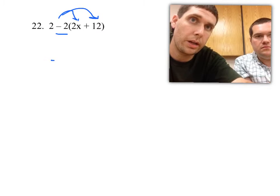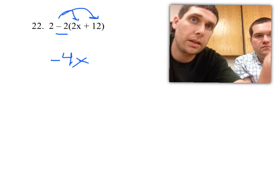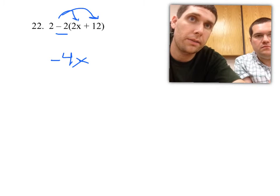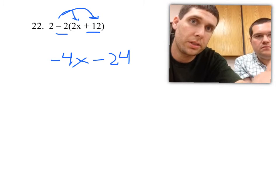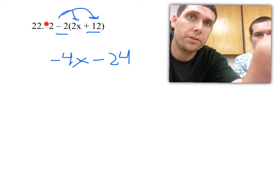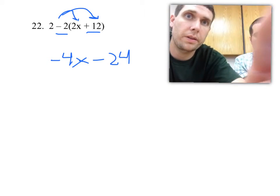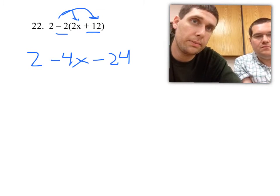So negative 2 times 2x is a negative 4x. And a negative 2 times the 12, negative times a positive 12, would be a negative 24. And then we can't forget, we still have this 2 sitting out here. So I need to write that down. So that's my first step.